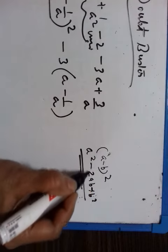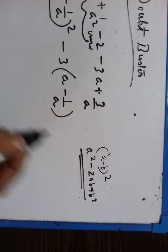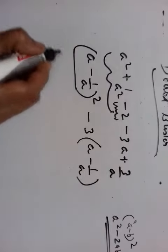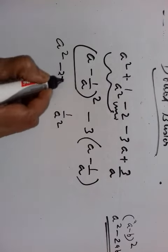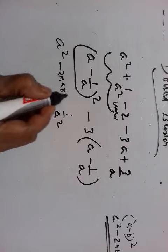First one squared, second one squared, minus 2 into first one into second one. Here this is equal to what? First one square, second one square, minus 2 into first one into second one.